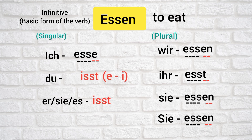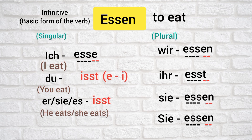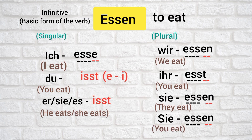For do and air zs, the form is east. So: ish asa means I eat, do east means you eat, air zs east means he/she eats, via asan means we eat, ear asked means you eat, z asan means they eat, and z asan means you eat (formal). I hope this is clear.